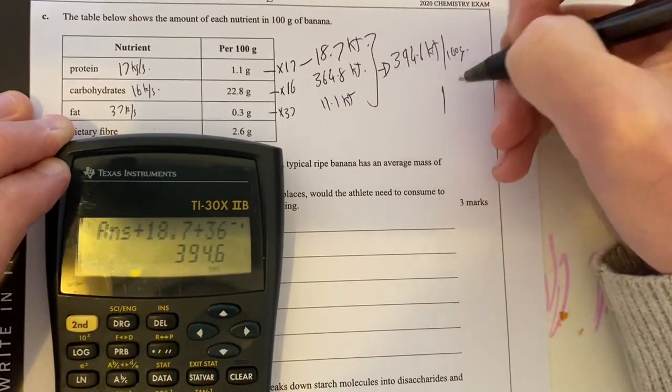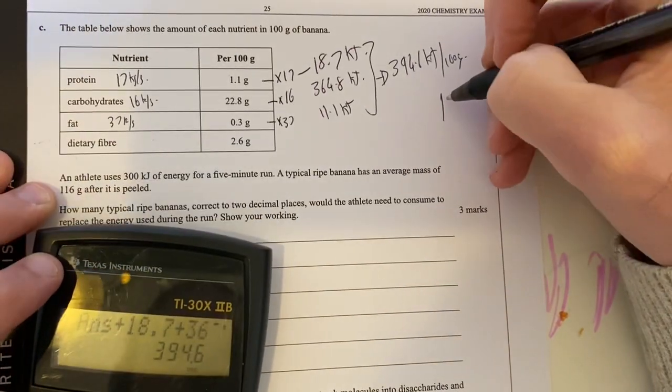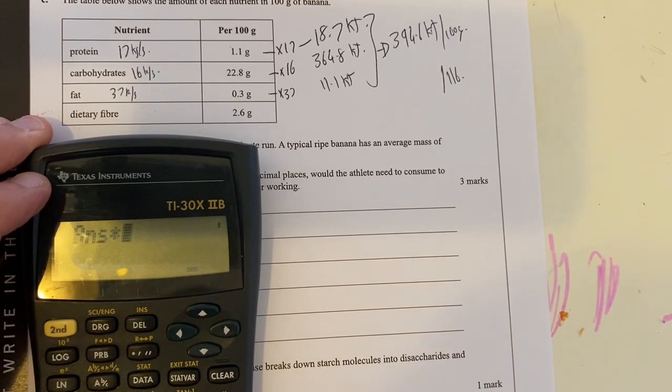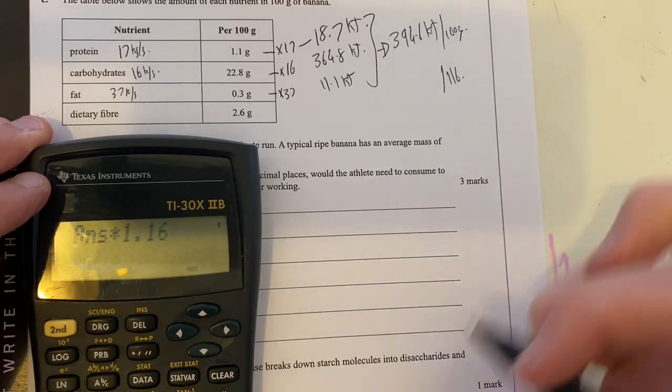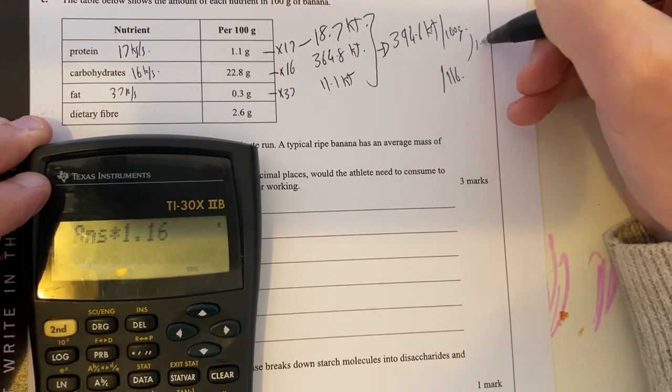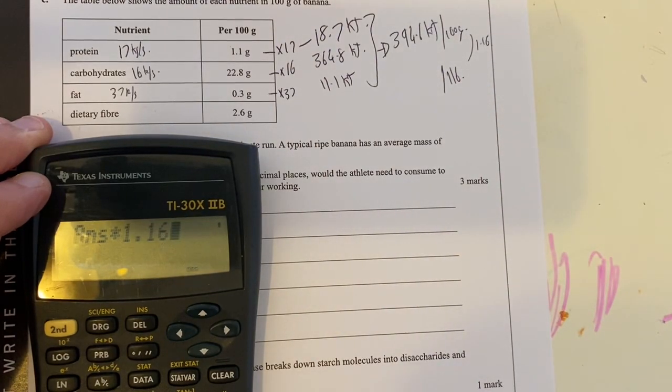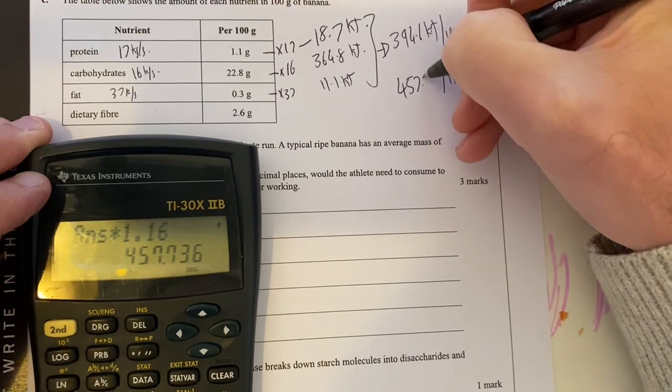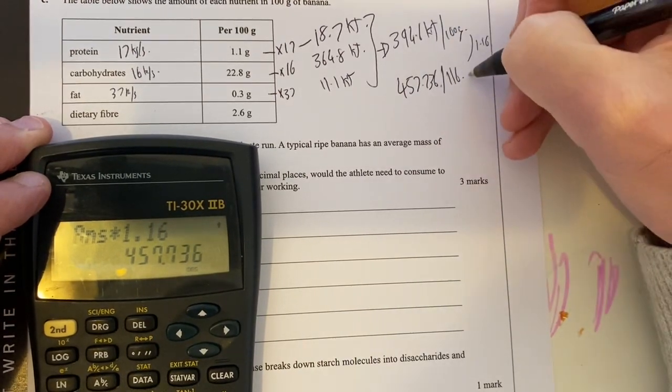I can then scale it up to per 116 grams, which is what a banana actually is. Let's take that and times it by 1.16, because that's my scaling factor. That's going to be 457.736 kilojoules per banana.